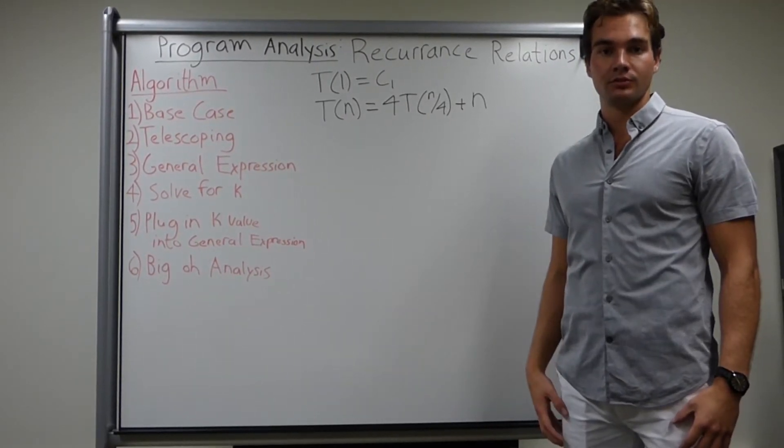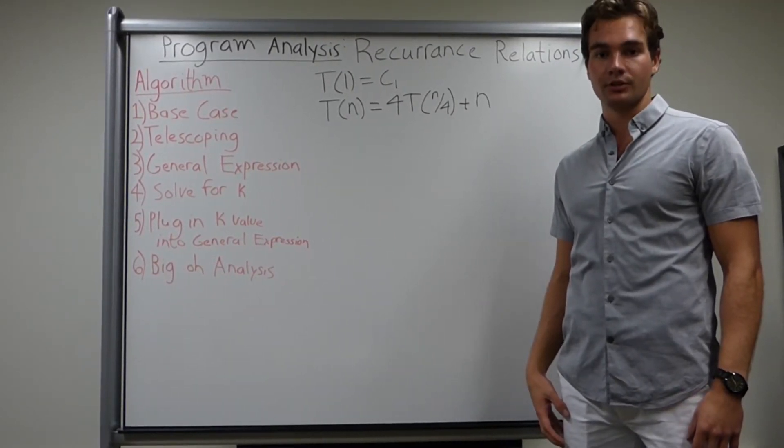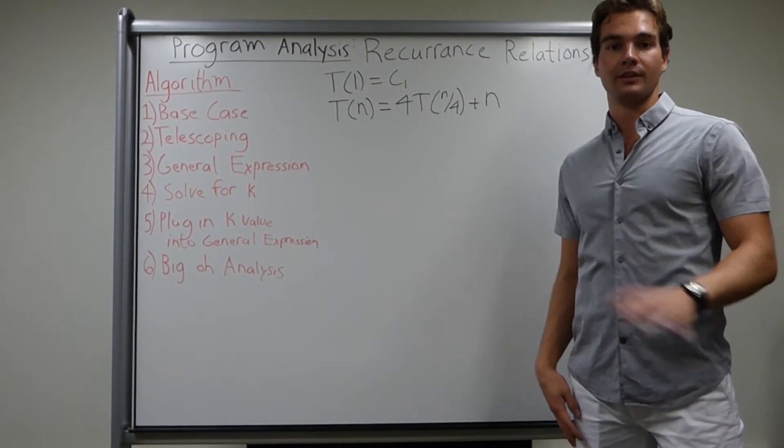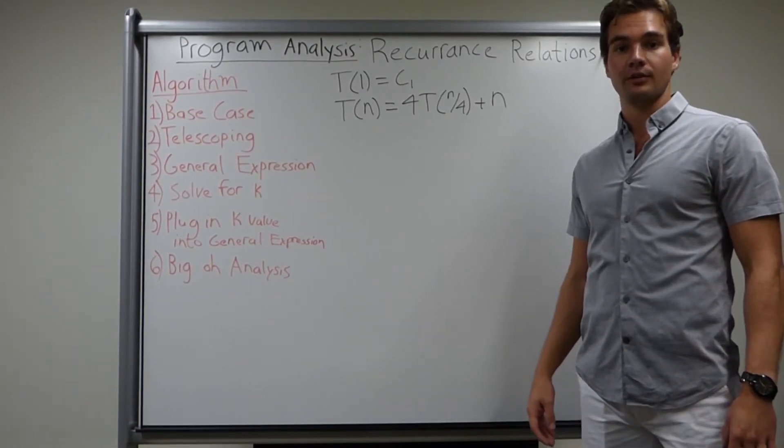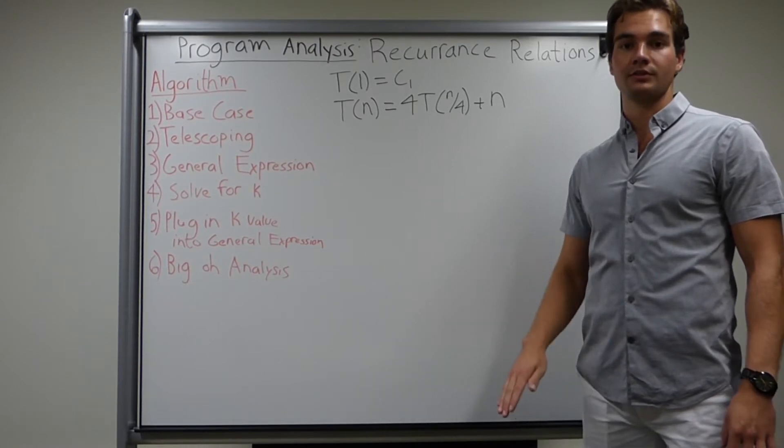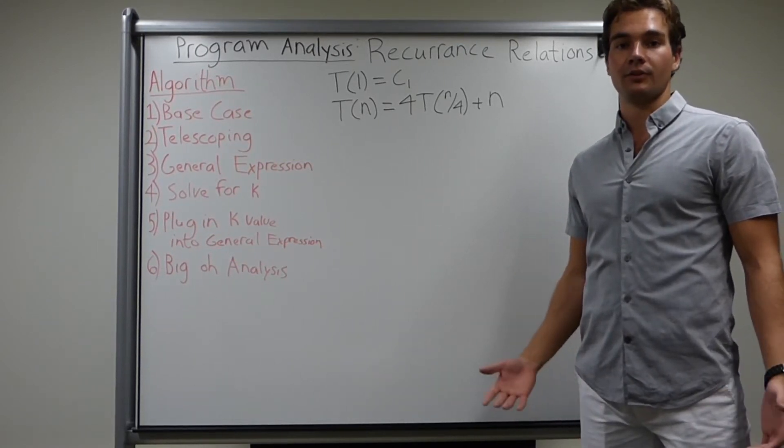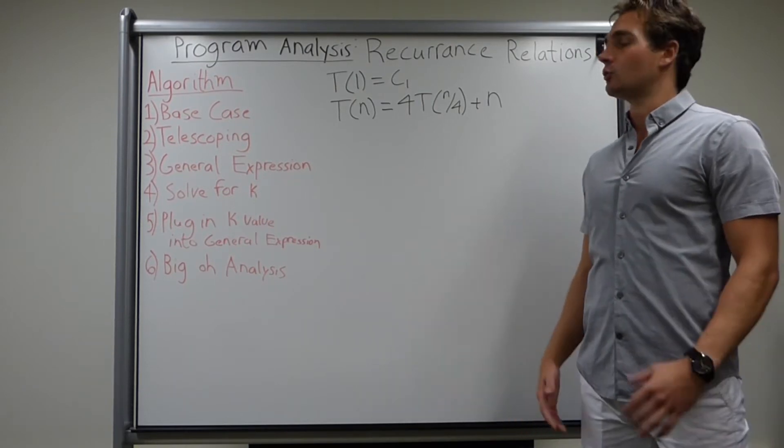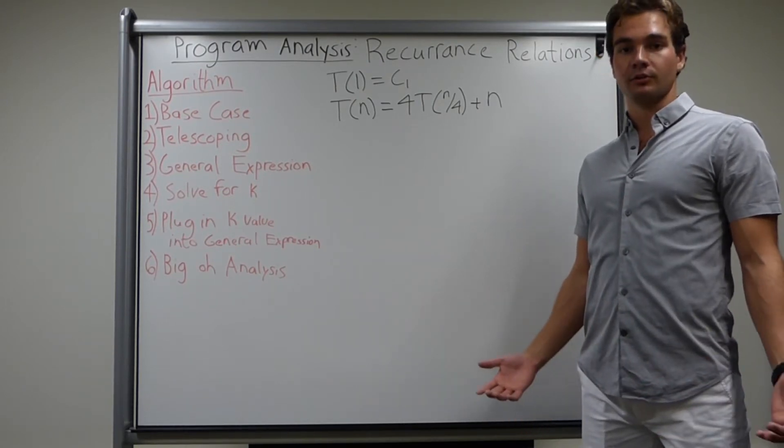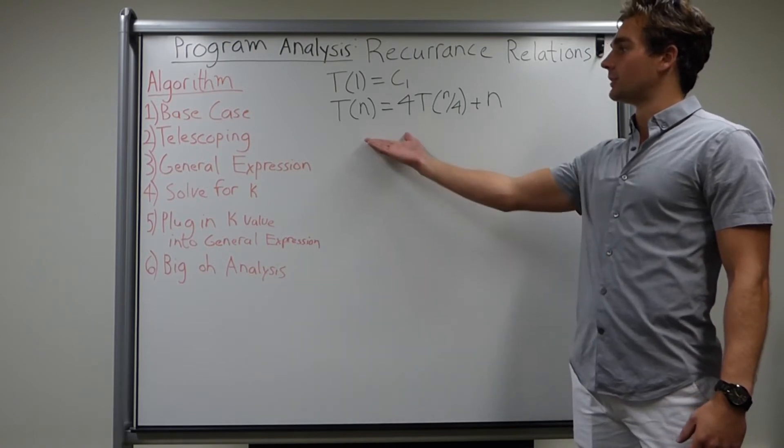A recurrence relation is used to describe a recursive function. A recursive function is very simply put, a method or function that calls itself during its sequence of instructions, and they all have one thing in common: they approach a base case so that the program ends. To represent that in mathematical terms, we have this recurrence relation up on the board.